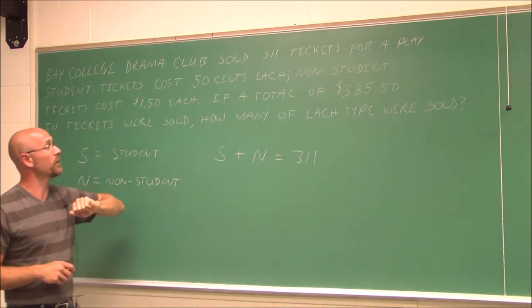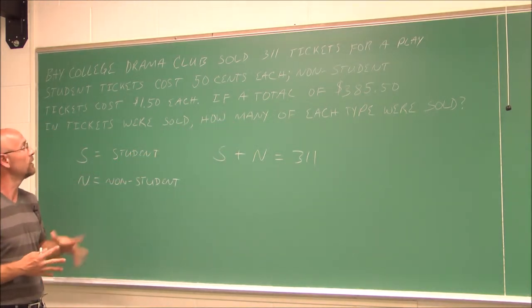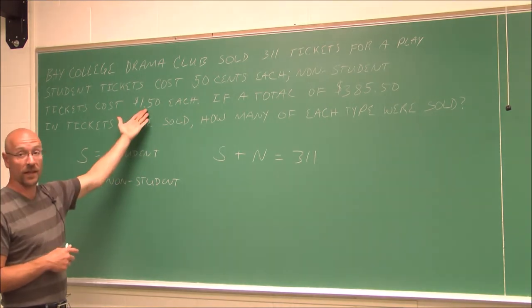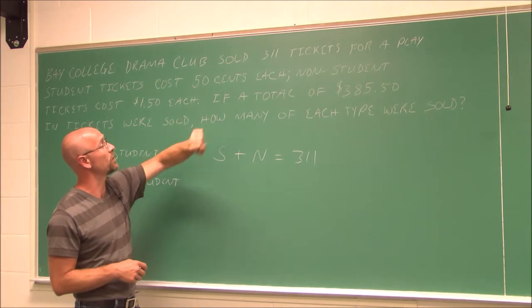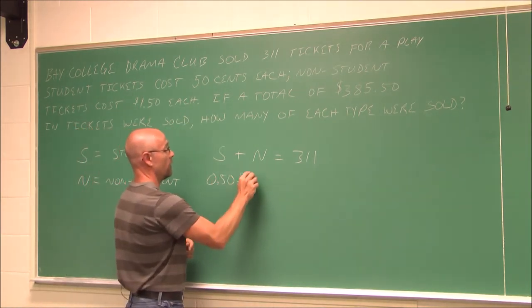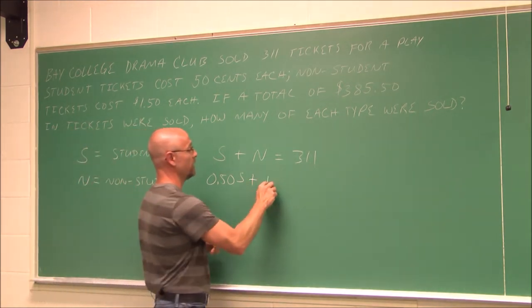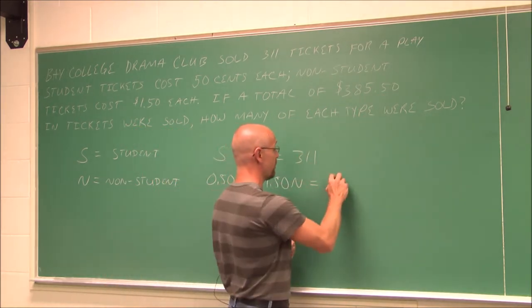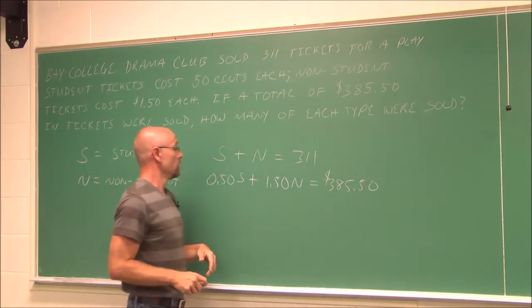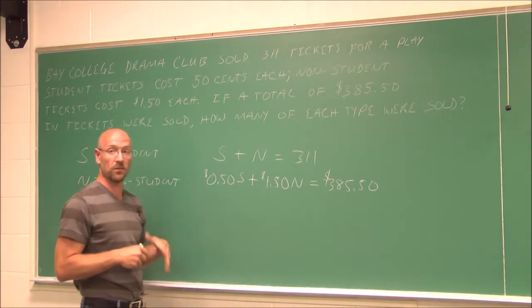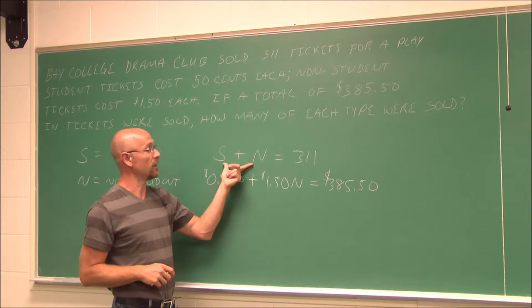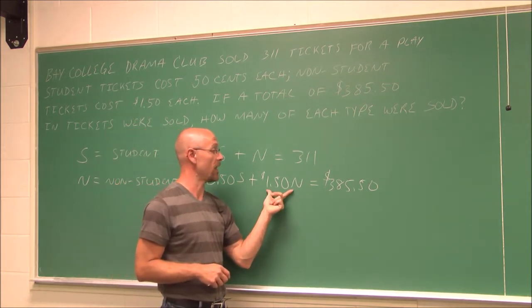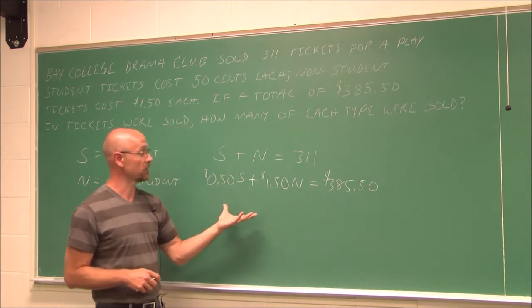And we know the total of $385.50 was made from the sale of these tickets. Well, how do we find the value? We take how much they cost times the number we sold. So if we say, $0.50 were for the student tickets, plus the $1.50 for every non-student ticket, this will give us the total amount we make, which is $385.50. So we have a linear equation, S plus N equals 311. And another linear equation, 0.5S plus 1.5N equals 385.5. This is our system of linear equations.